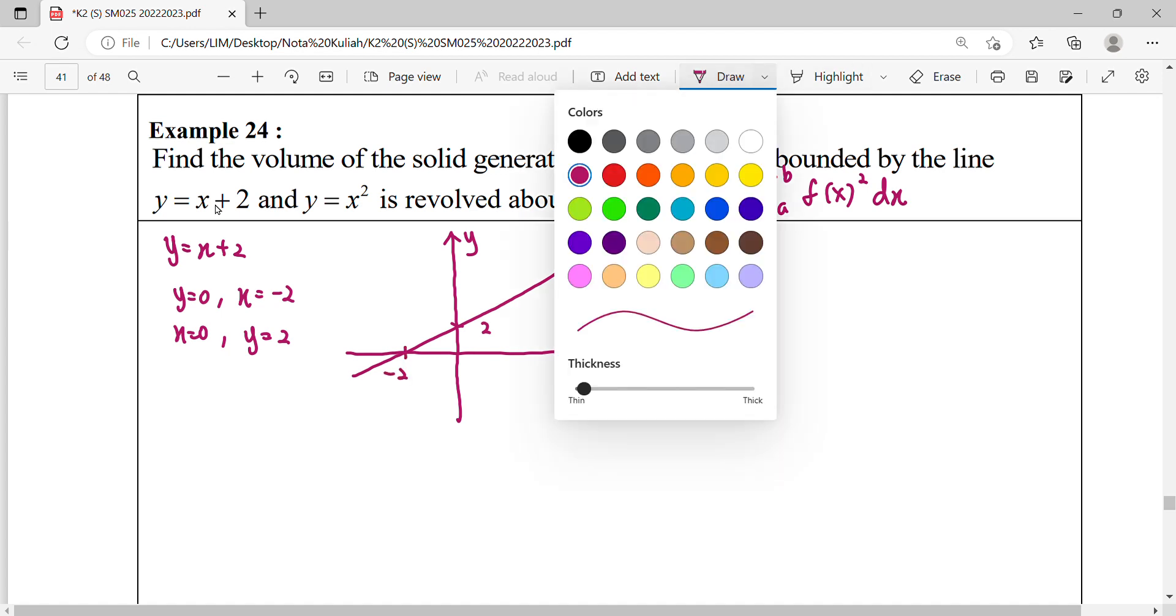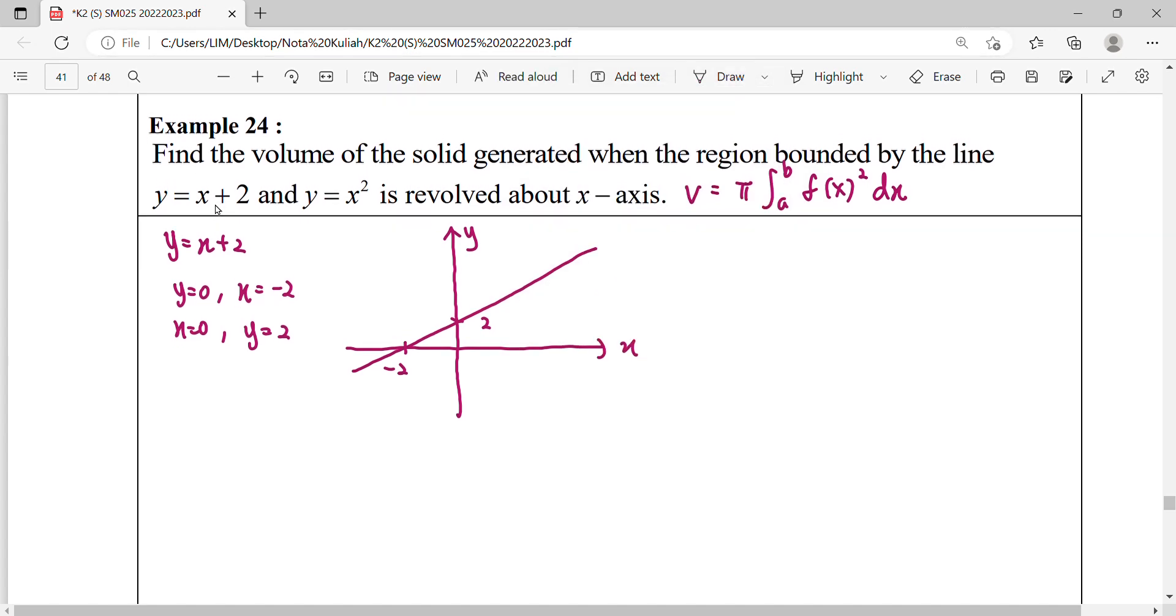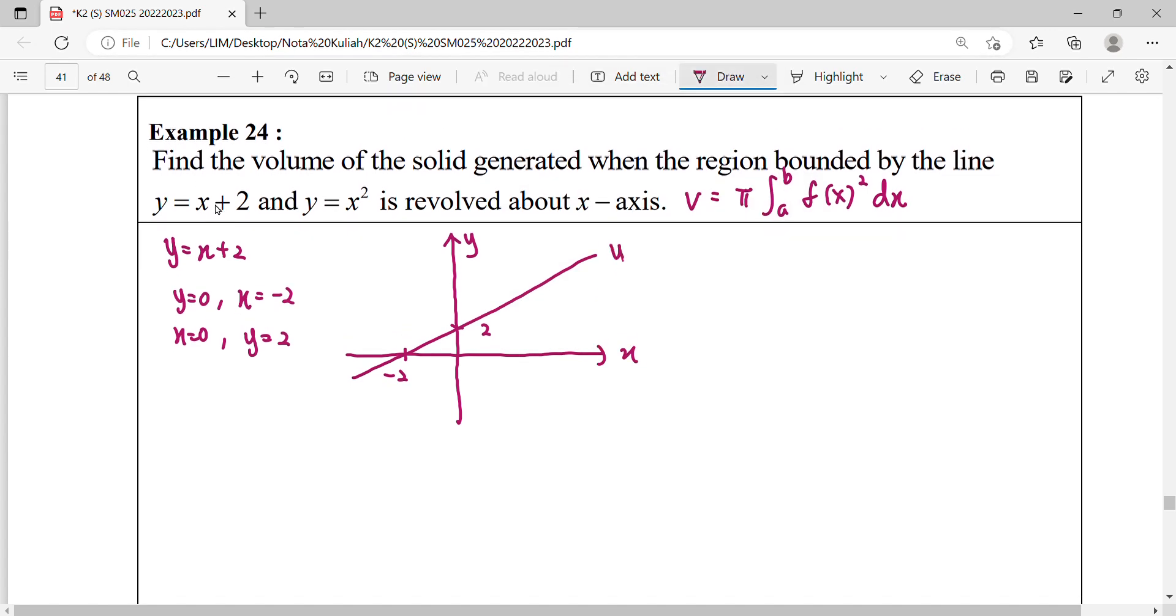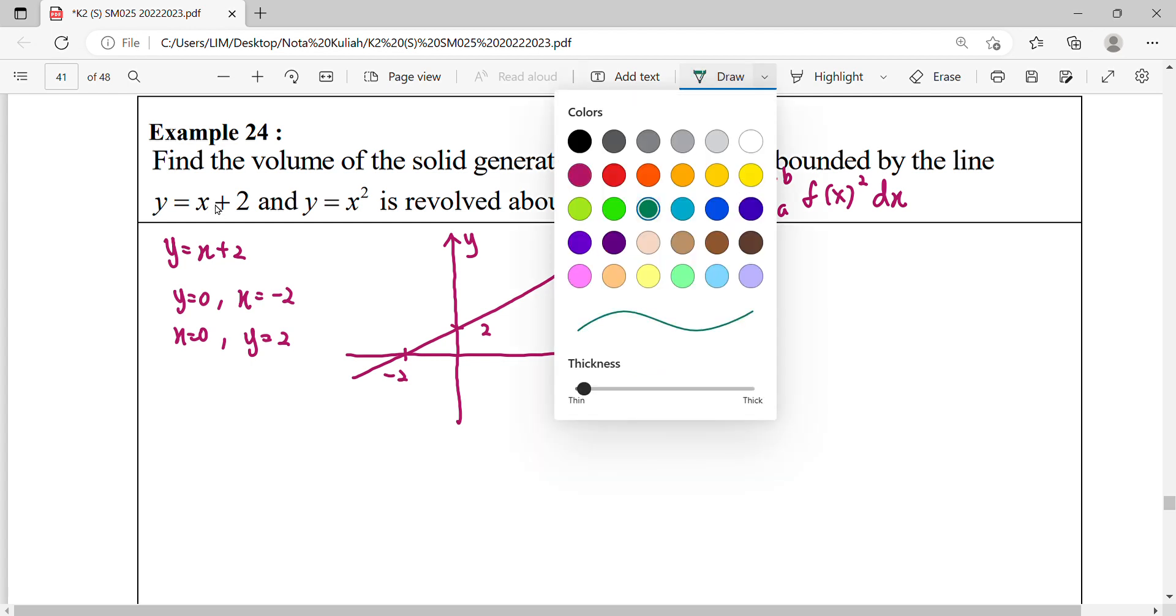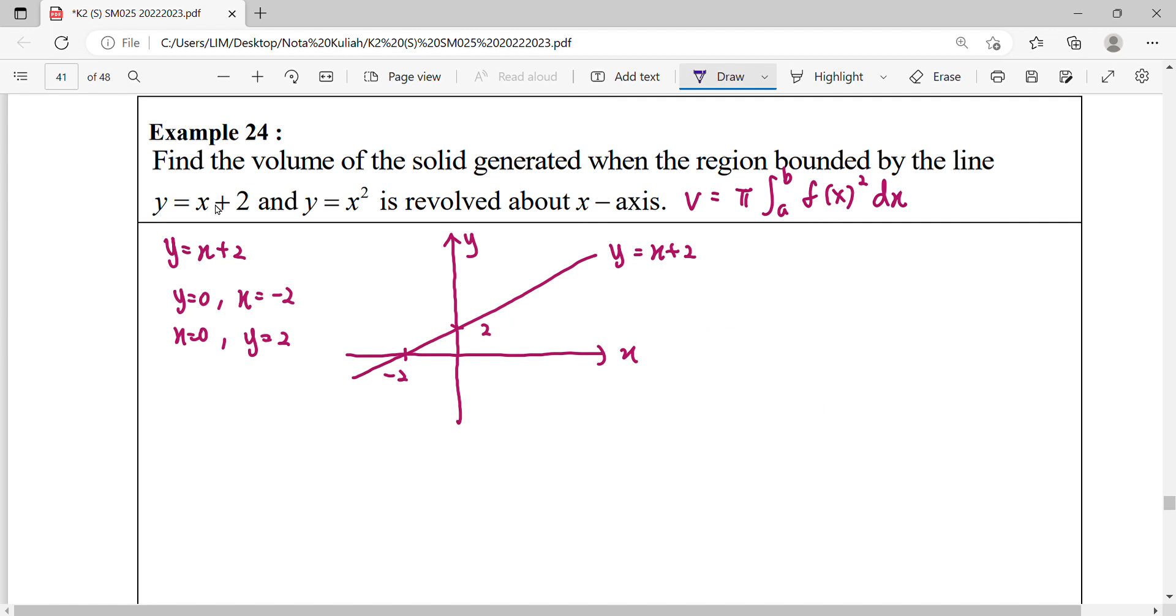Meanwhile for the quadratic graph, so before we draw the quadratic graph we label first. For quadratic graph here y = x², it will be at the minimum point at origin. So this is y = x², origin 0,0.